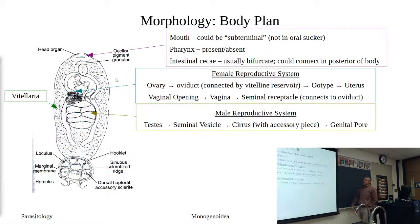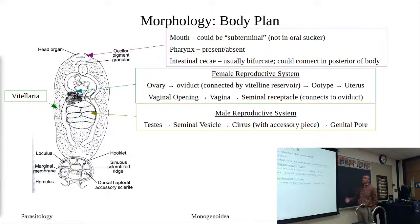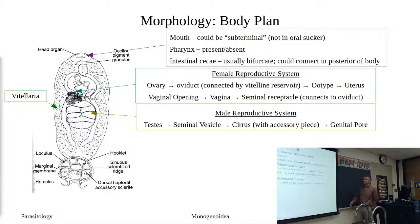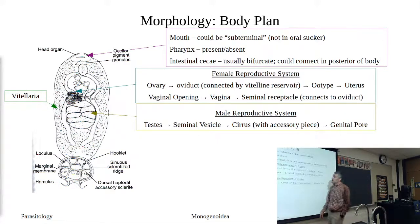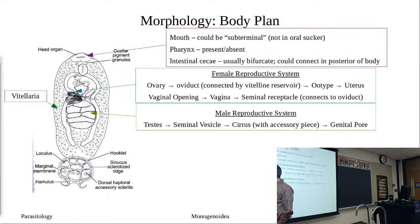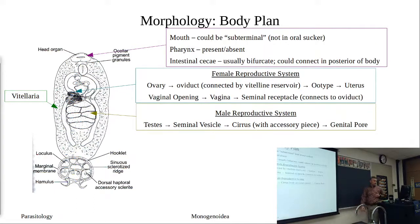At the anterior end, the mouth can be terminal or subterminal. The pharynx could be absent or present depending on the species. The intestinal caeca are usually bifurcate — they normally split near the pharynx and mouth and extend down; they may remain separate or connect.